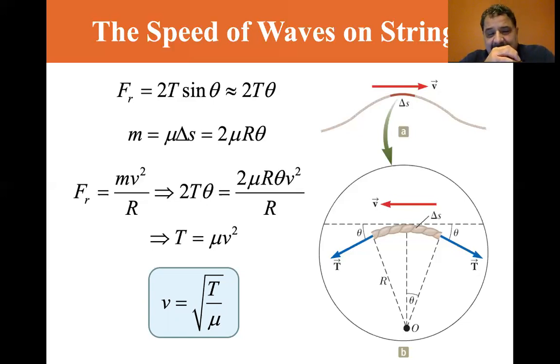So if you want the velocity to go up, you can either increase the tension and the velocity will go up. If the mass density goes up, the velocity will go down. Consequently, if the mass density goes down, the velocity will go up if it's lighter.